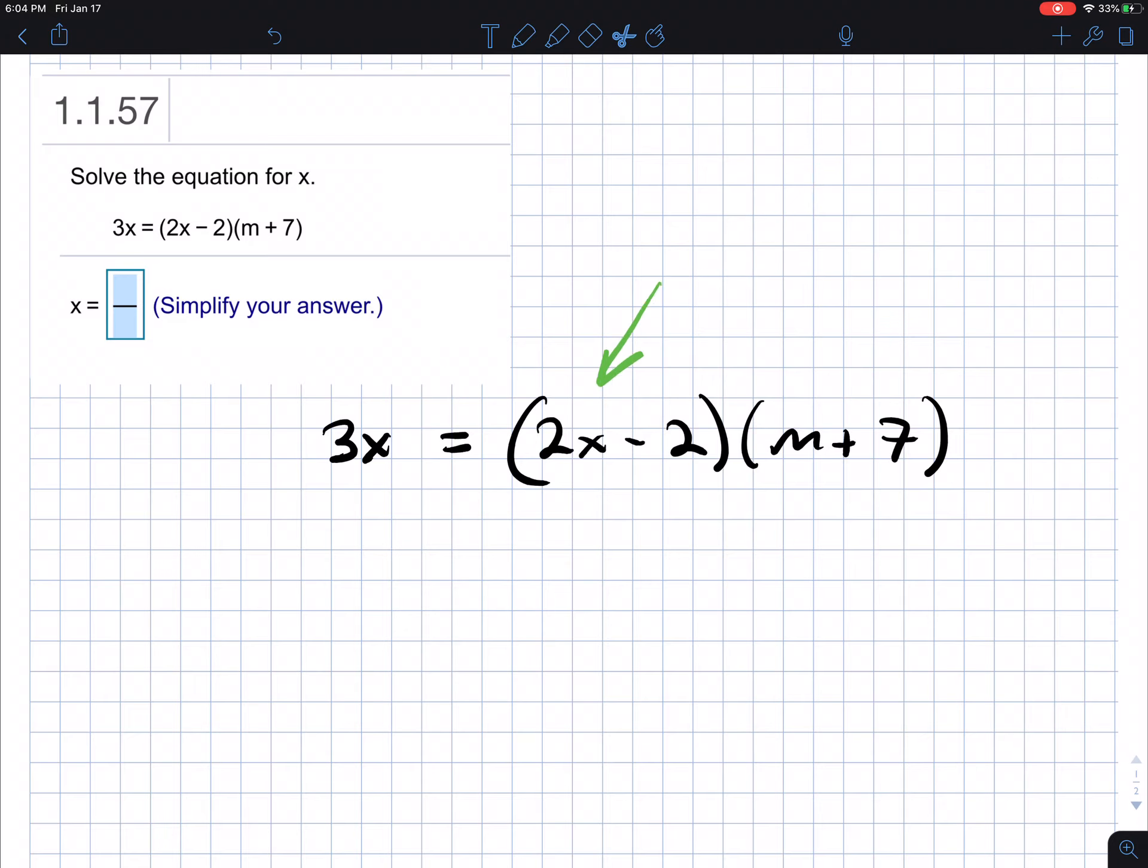We have a binomial because we have 2 terms times another expression of 2 terms. So we're going to use the technique of FOIL. FOIL stands for first, outer, inner, and last.